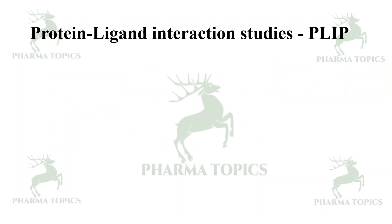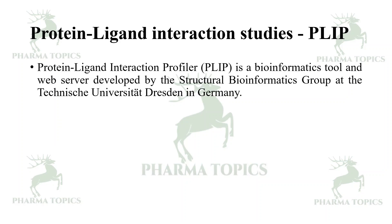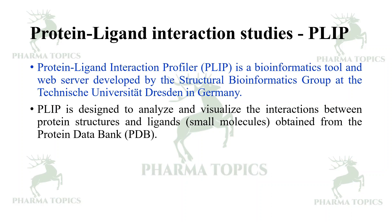Next is PLIP, used to study protein-ligand interaction studies. PLIP is a bioinformatics tool developed by the Structural Bioinformatics Group at the Technical University of Dresden in Germany. It is designed to analyze and visualize interactions between protein structures and ligands — that is, small molecules — obtained from the PDB.